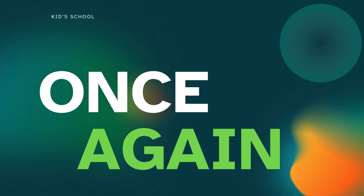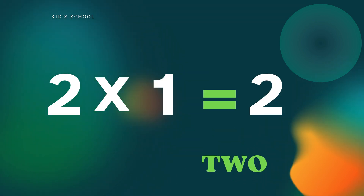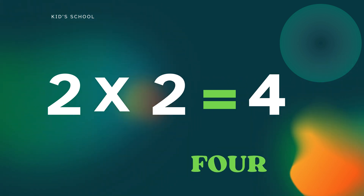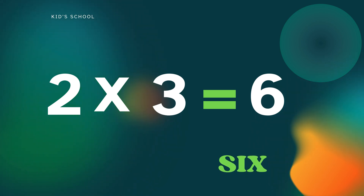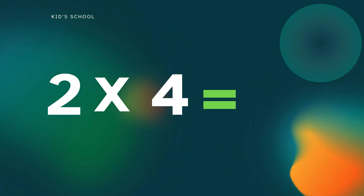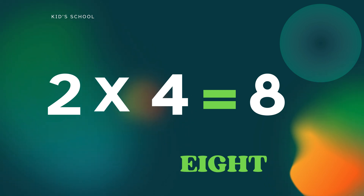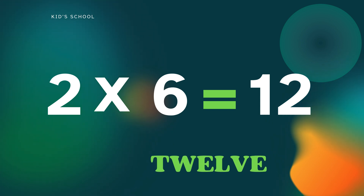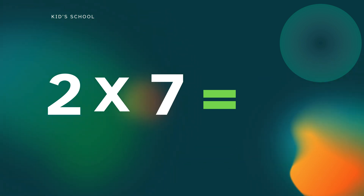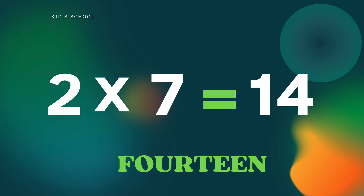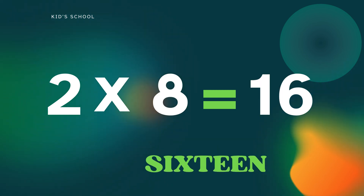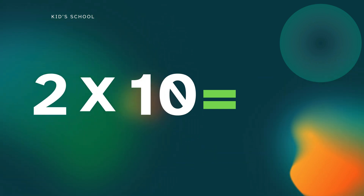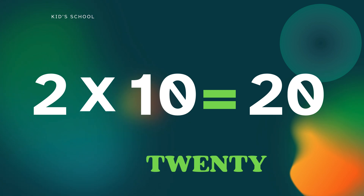So, once again please. 2×1 is 2. 2×2 is 4. 2×3 is 6. 2×4 is 8. 2×5 is 10. 2×6 is 12. 2×7 is 14. 2×8 is 16. 2×9 is 18. 2×10 is 20. Wow!